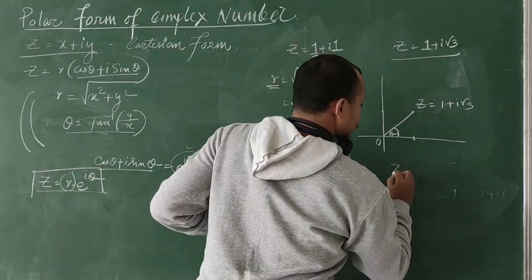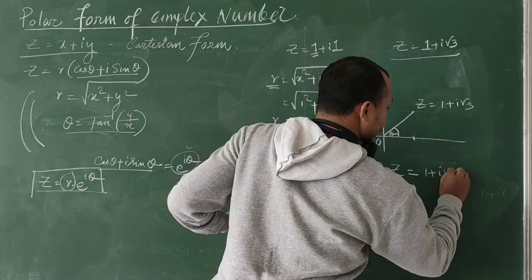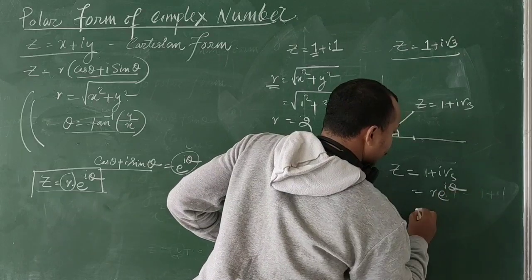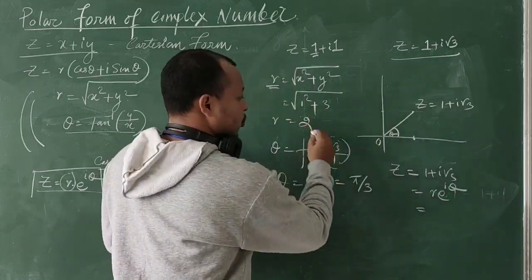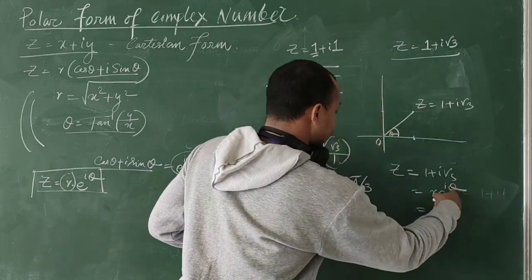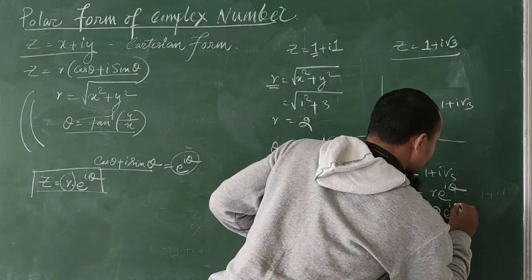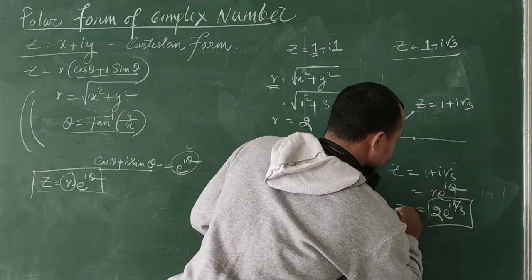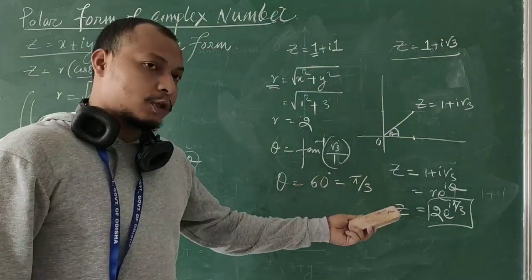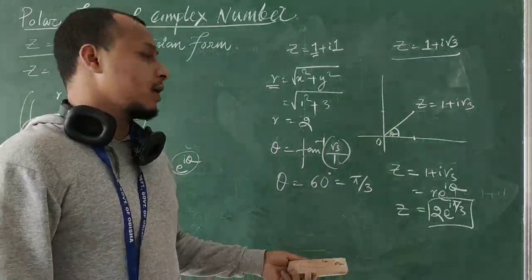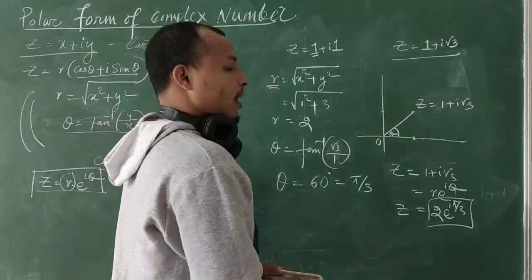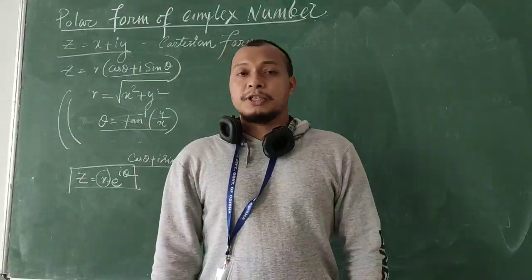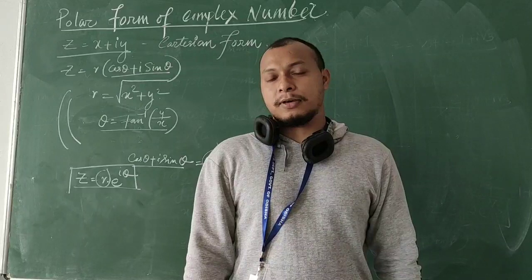Now θ = tan⁻¹(Y/X) = tan⁻¹(√3/1) = tan⁻¹(√3) = 60° = π/3 radians. So Z = 1 + i√3 can be written as Z = 2·e^(iπ/3). I hope you understood.